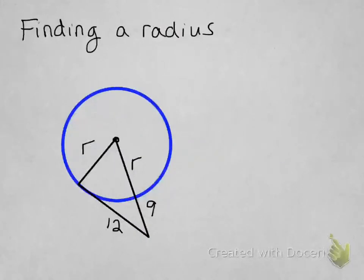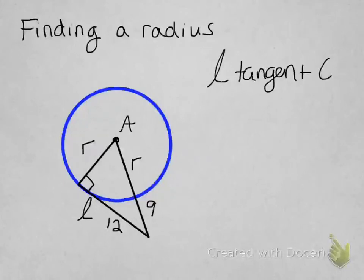Finding a radius is a little bit harder, but we know that this is a right triangle. I'm giving you that information. I'm saying that this line, so line L, is tangent to circle A.